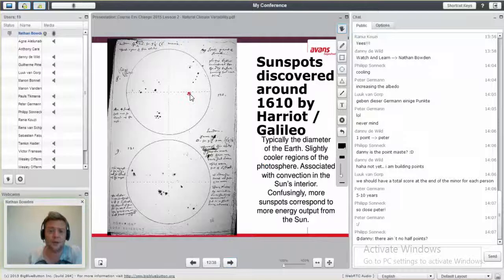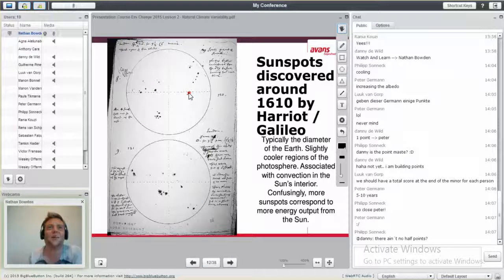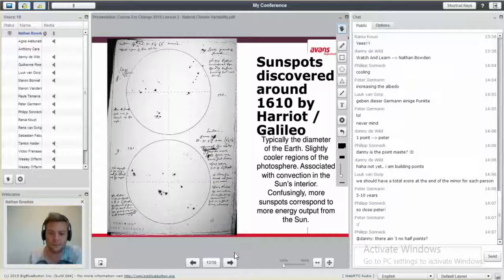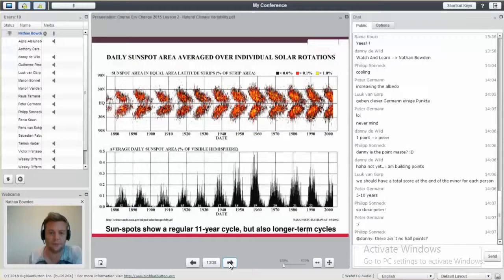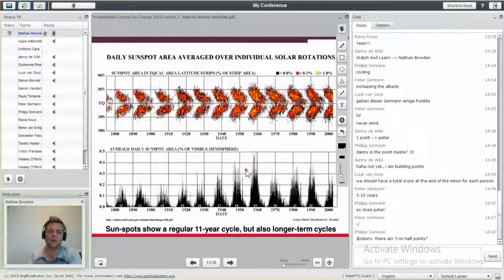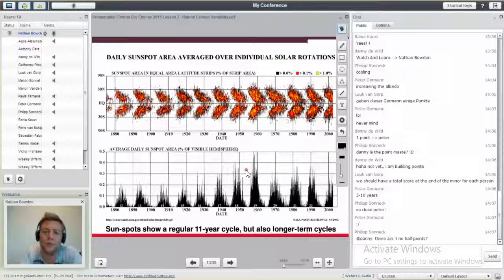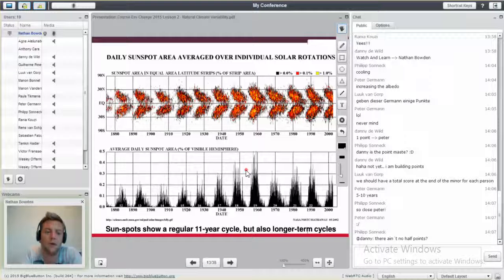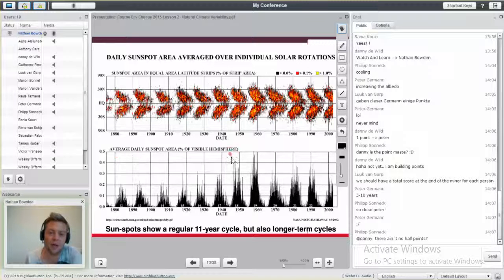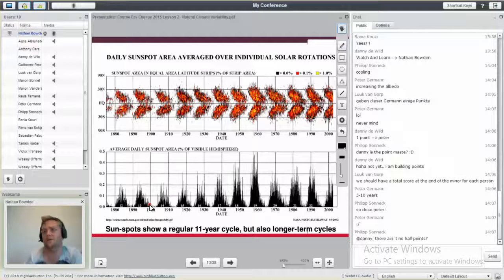These little spots, they're about the size of the Earth. We forget how big the sun is. Here is the daily sunspot area for solar rotation. We make a trip around the sun once every year. The average daily sunspot area in the visible hemisphere. Sometimes they grow. Do you notice something? There's a pattern. It's not understood. There is about an 11-year cycle. There have been longer cycles, and we don't know why.